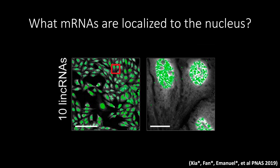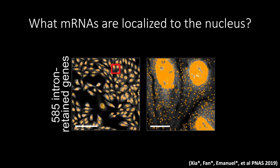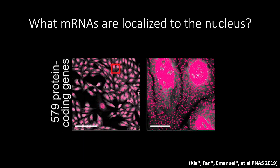In addition, RNAs with retained introns were also preferentially enriched in the nucleus as expected. Interestingly, although protein-coding mRNAs are translated in the cytoplasm, we identified a large number of protein-coding genes to be highly enriched in the nucleus.